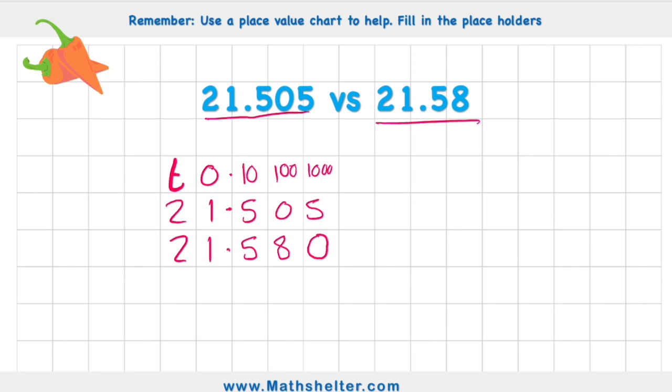So now if I'm looking at the amount of thousandths I have, in the top number I have 505, but in the bottom number I have 580. So which one's larger? Well, obviously the 580 has more thousandths than 505.